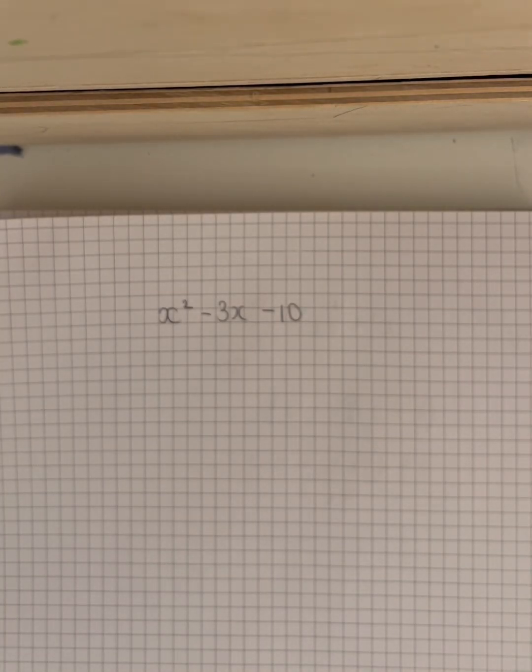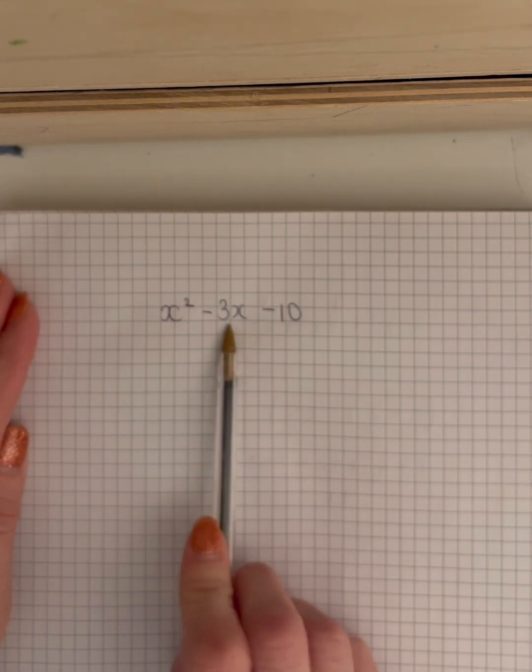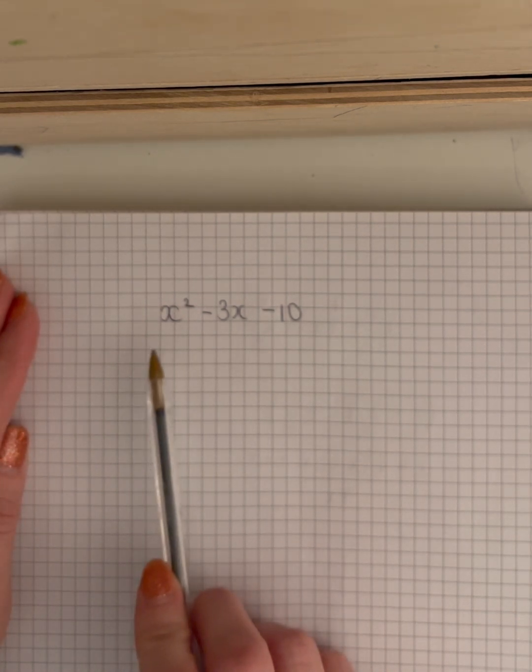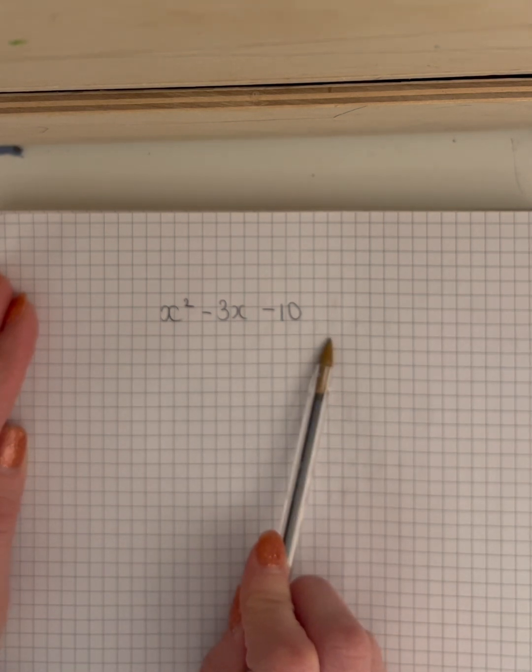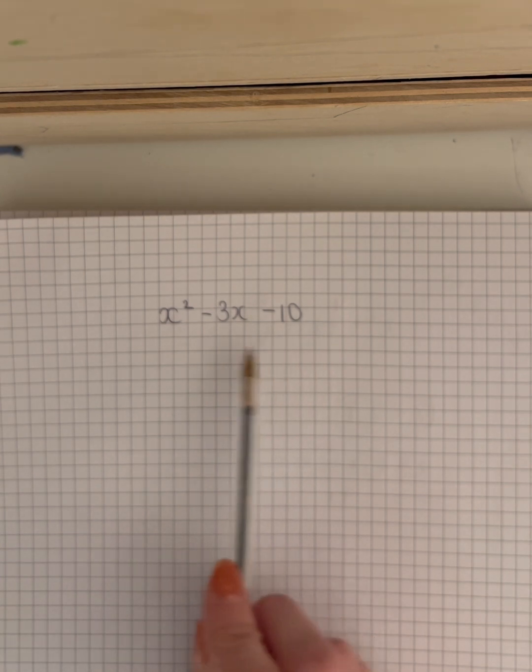Okay, you could be asked to factorize this one, and we can see it's got an x squared term, an x term, and a number. Don't worry about the signs, but I've got three terms here, so I know straight away, because of the x squared and because of the number, it's going to have to be two brackets.